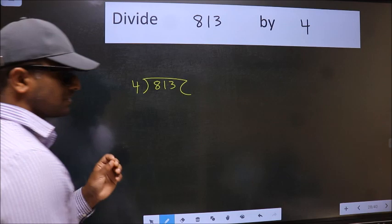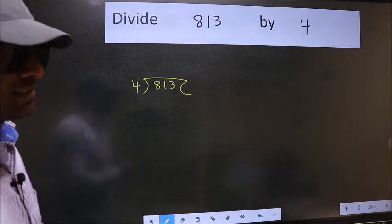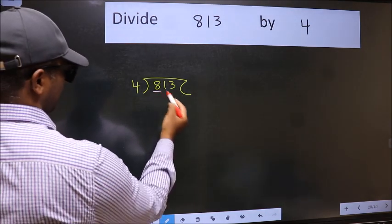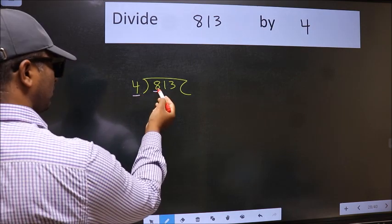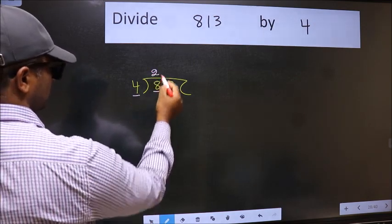This is your step 1. Next, here we have 8 and here 4. When do we get 8 in 4 table? 4 times 2 is 8.